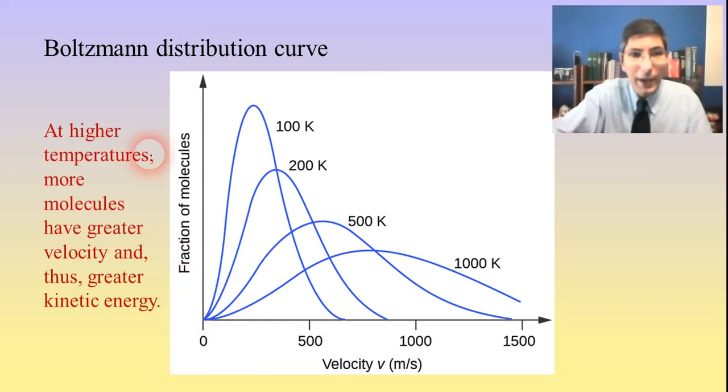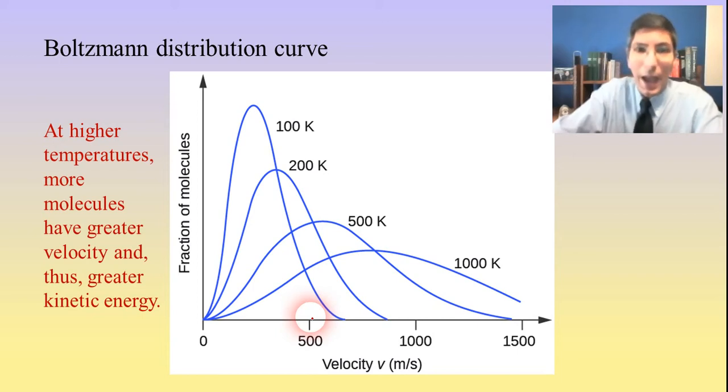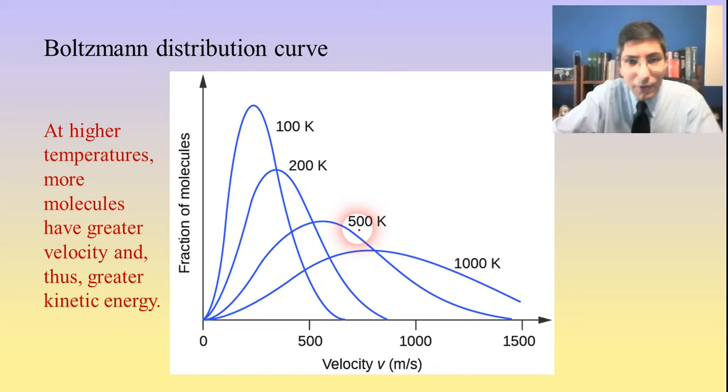As we move to higher temperatures, more molecules are going to have a greater velocity and thus greater kinetic energy. At 200 kelvins, notice that we have more molecules that have a higher velocity, so more of those molecules will be able to evaporate and escape the liquid, perhaps turn into a gas. As we move to the right at 500 kelvins, notice that we have even more molecules shoved farther to the right, moving faster and faster.